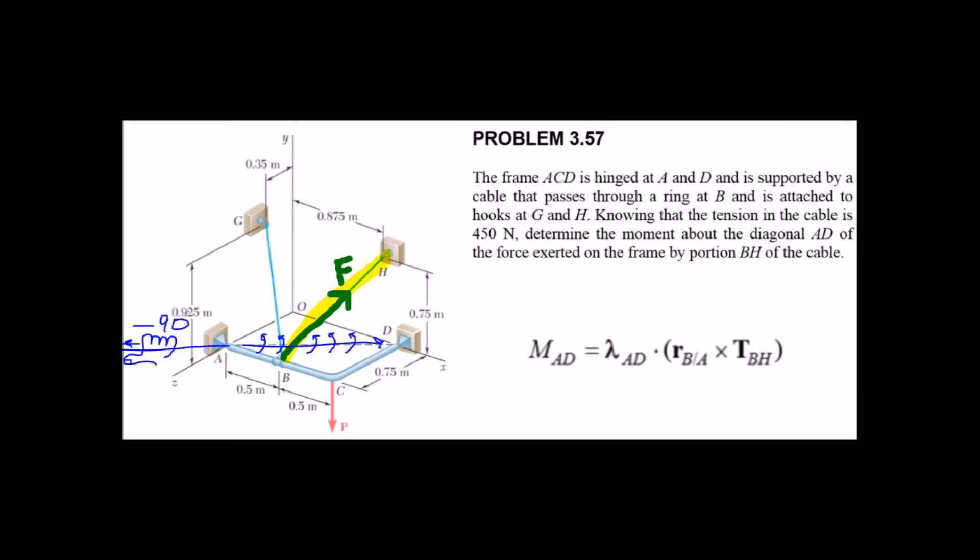So just take a look at this diagram. We're now trying to rotate the force from cable BH around the line AD. It's negative. Use the right hand rule. You're going back in the negative direction. So instead of IJK, we have moment around a new direction.